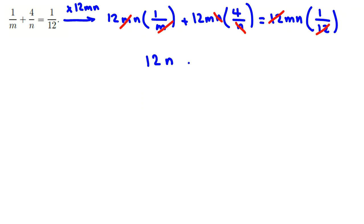Now we can write 12n plus 48m equals mn. Now if we take all things to right hand side, it will be mn here.